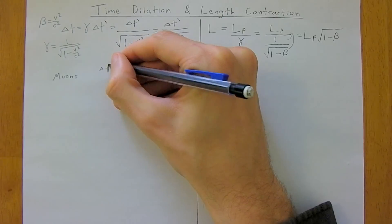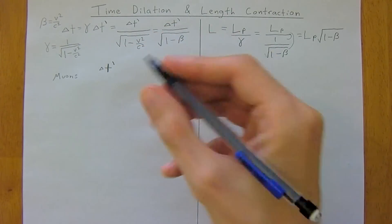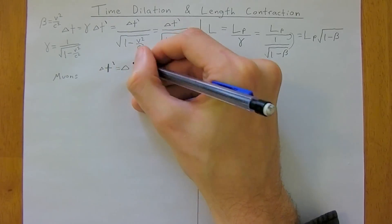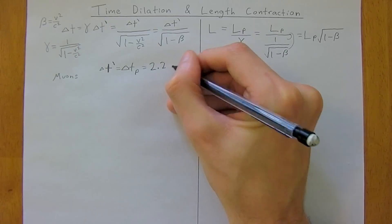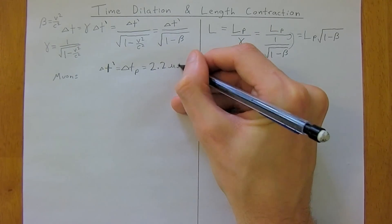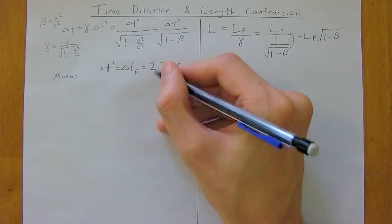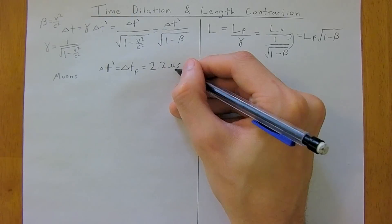So delta t, lifetime of the muons, which is also the proper lifetime of the muons they knew, was 2.2 microseconds,